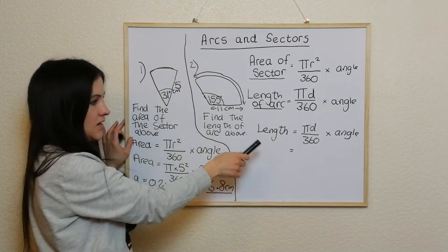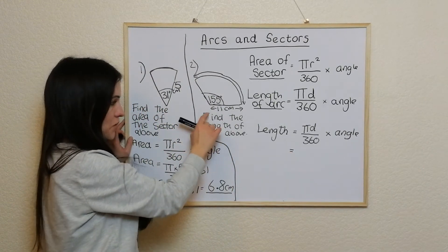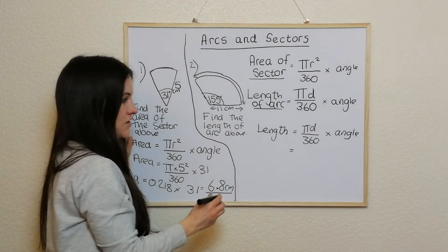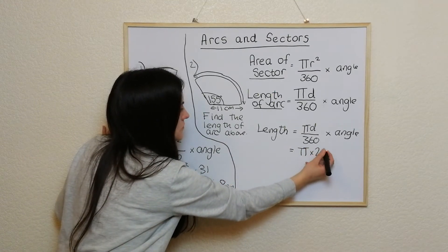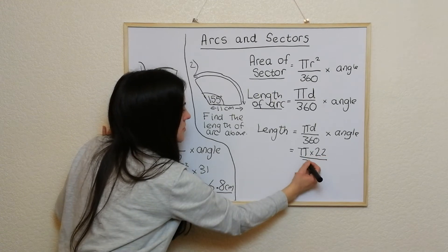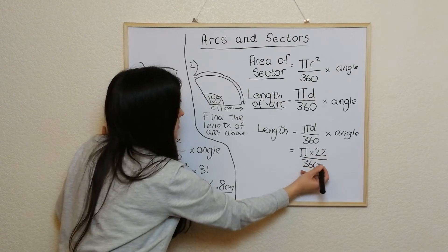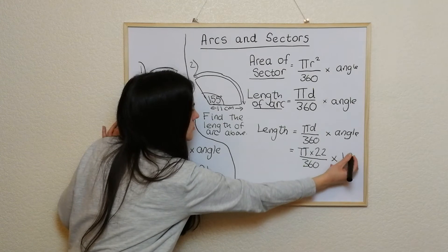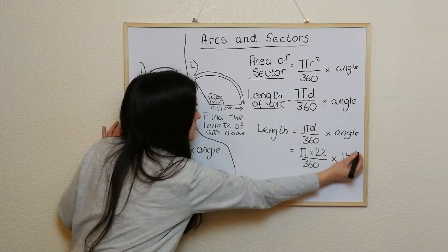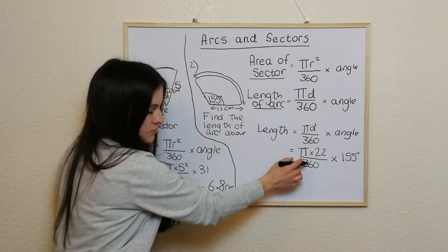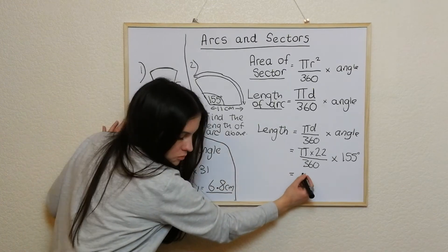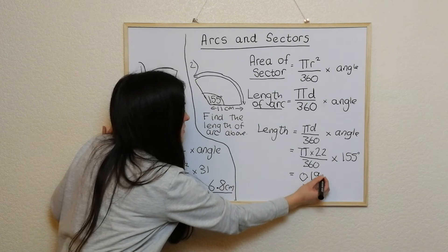So the diameter in this instance is going to be 22 because the radius is 11. So it's pi times 22 divided by 360 and times it by 155. So what we find here is that this bit here becomes 0.192.